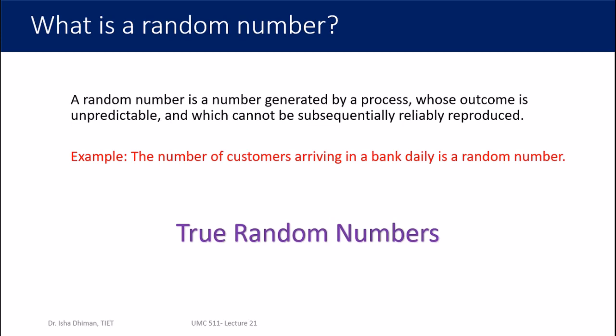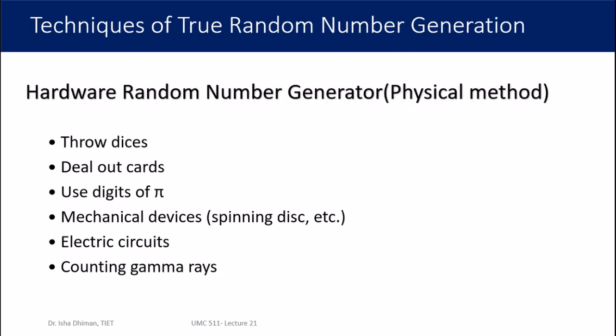Now, what are the techniques for true random number generation? These are generally known as hardware random number generation — HRNG — also called the physical method, because a physical process is running in the background. Examples include throwing a die: throw a die 10 times, collect the sequence of numbers you get, and that is a sequence of random numbers.